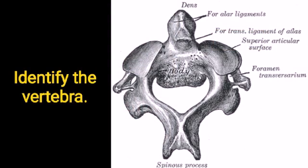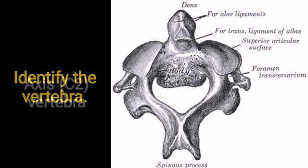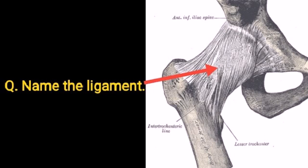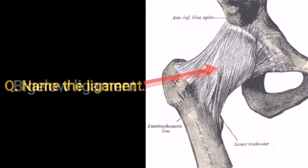Identify the vertebra. Axis vertebra, or the second cervical vertebra. Name the ligament. Bigelow's ligament, also known as the iliofemoral ligament.